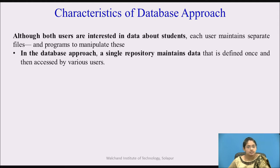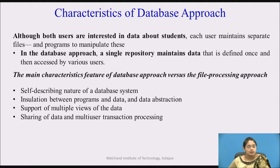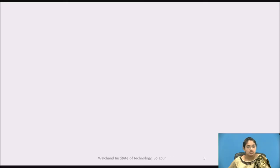In the database approach, a single repository maintains the data that is defined once and then accessed by various users. The main characteristic features of the database approach versus the file processing system are: first, self-describing nature of the database system; second, insulation between the programs and data and data abstraction; support of multiple views of the data; and sharing of data and multi-user transaction processing. Let's see all the characteristics one by one.